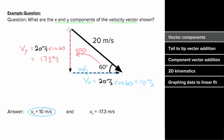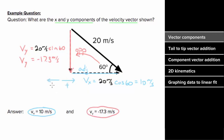But since this vertical component is directed downward, technically this vertical component would be negative 17.3 meters per second. So using sine and cosine will give you the magnitude of the components, but you have to add the negative signs accordingly. If the vector points right, the horizontal component will be positive. If the vector points left, the horizontal component will be negative. If the vector points up, the vertical component will be positive. And if the vector points down, the vertical component will be negative.